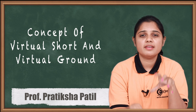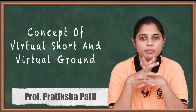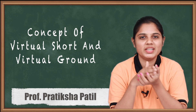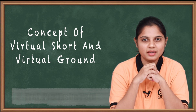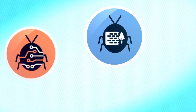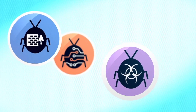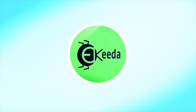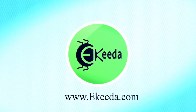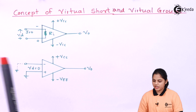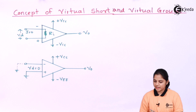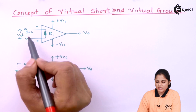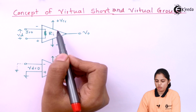We will see why it is called 'virtual.' Here I have drawn a diagram which looks like the equivalent circuit of an op-amp, where the input resistance Ri is shown.